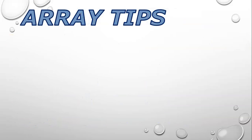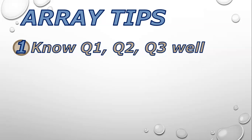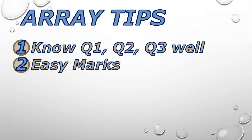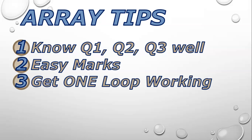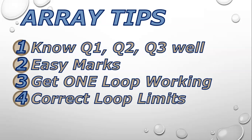To recap your array tips for your matric exam: number one, know questions one, two, and three very well — you'll take pressure off question four's marks and give yourself more time for it. Number two, there are easy marks in question four such as inputs, outputs, and correct formatting — make sure you get them, especially if you're running out of time. Number three, get one loop working for the first case and then put your outer loop around it. Number four, if you're confused about loop limits, refer to the array declaration to find out whether it's 1 to 10 or 1 to 5.